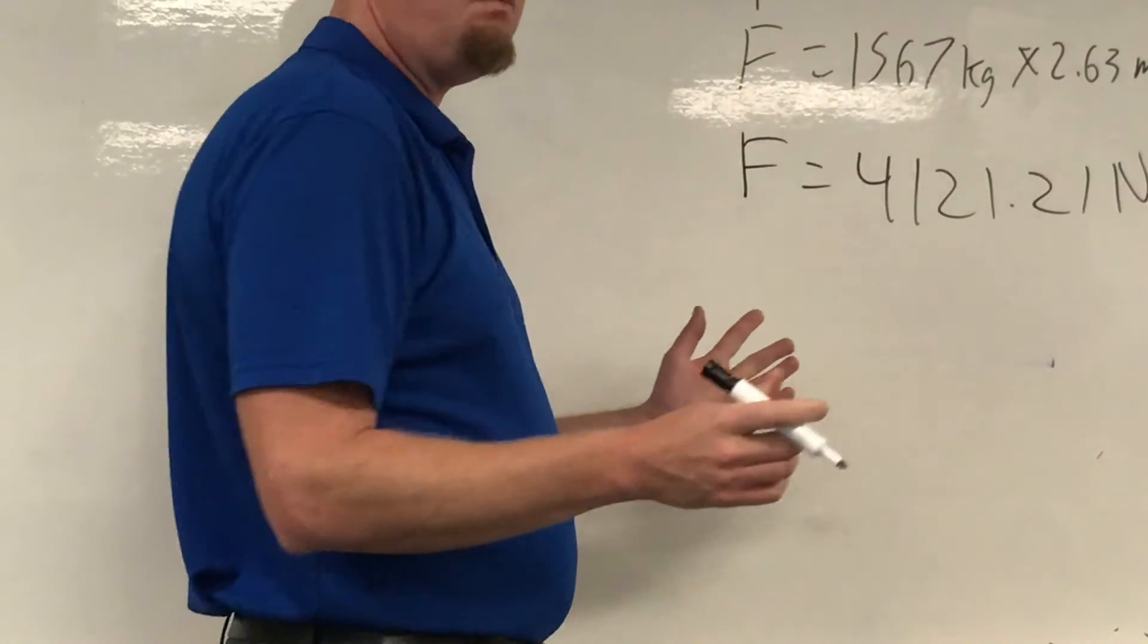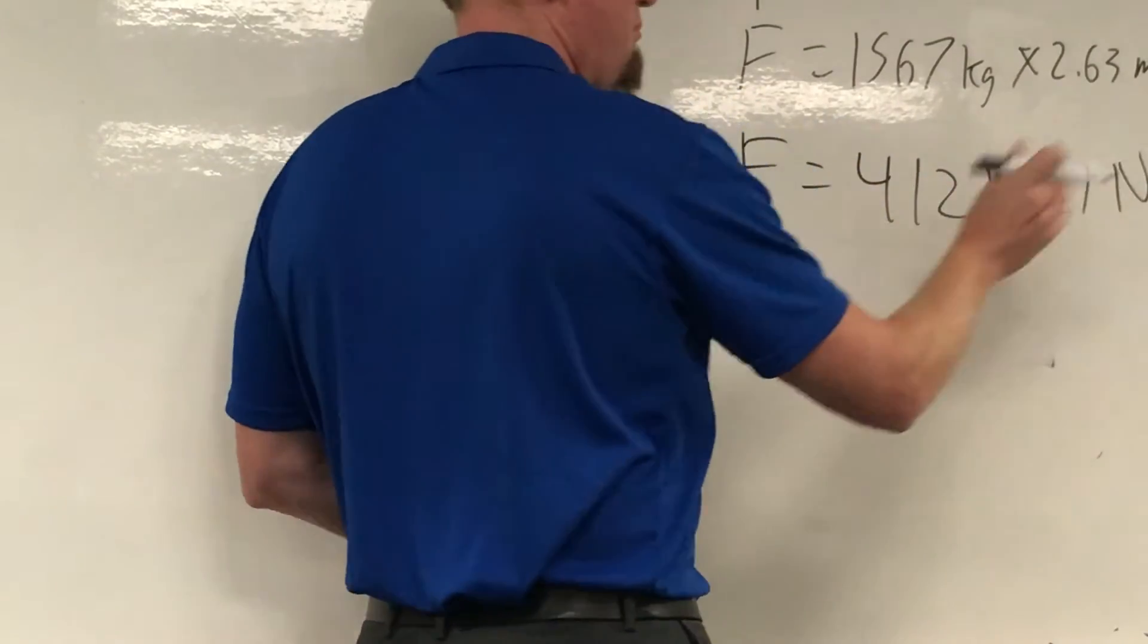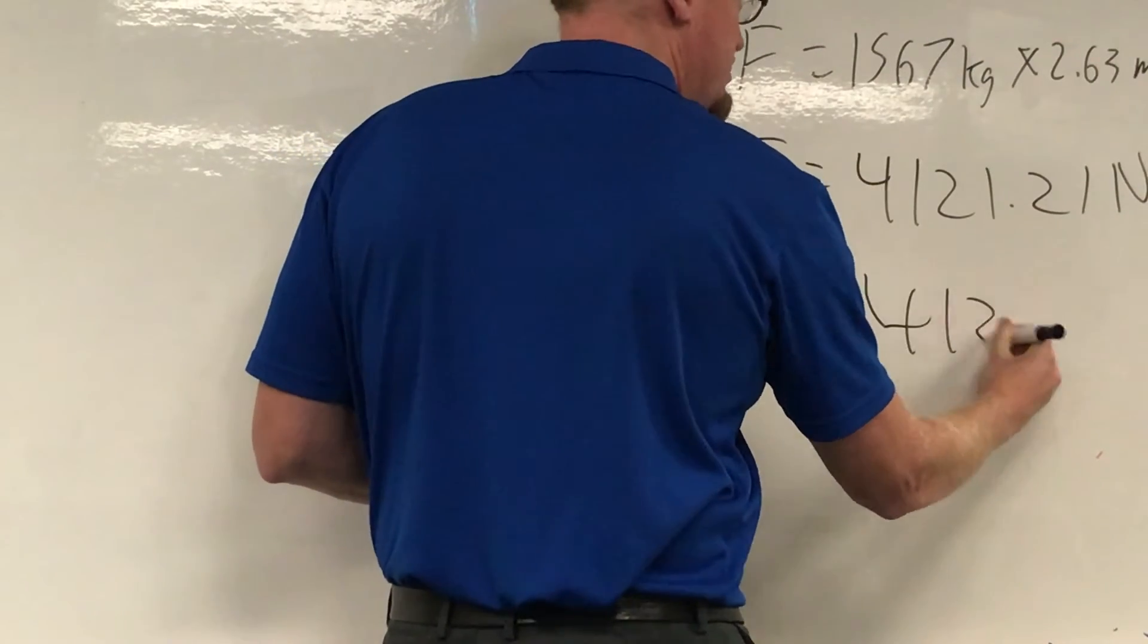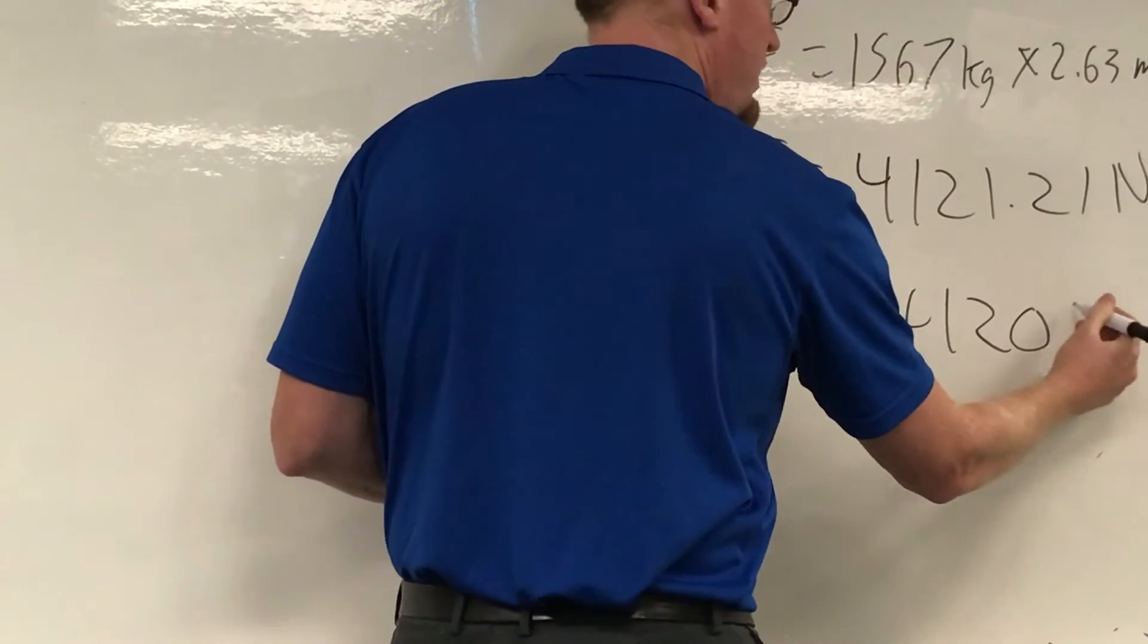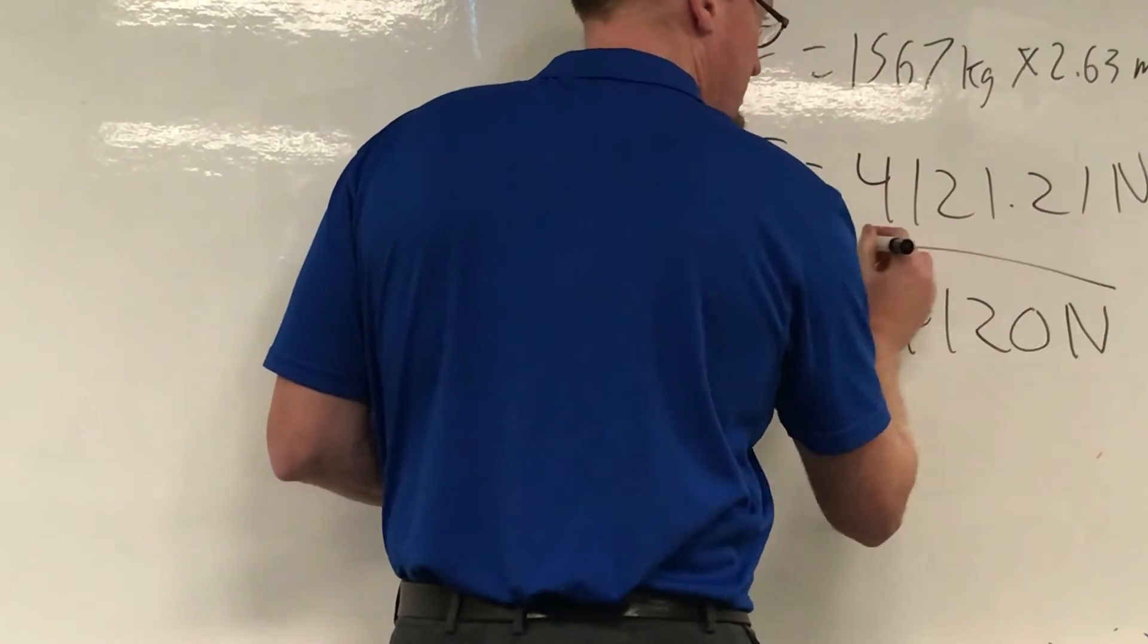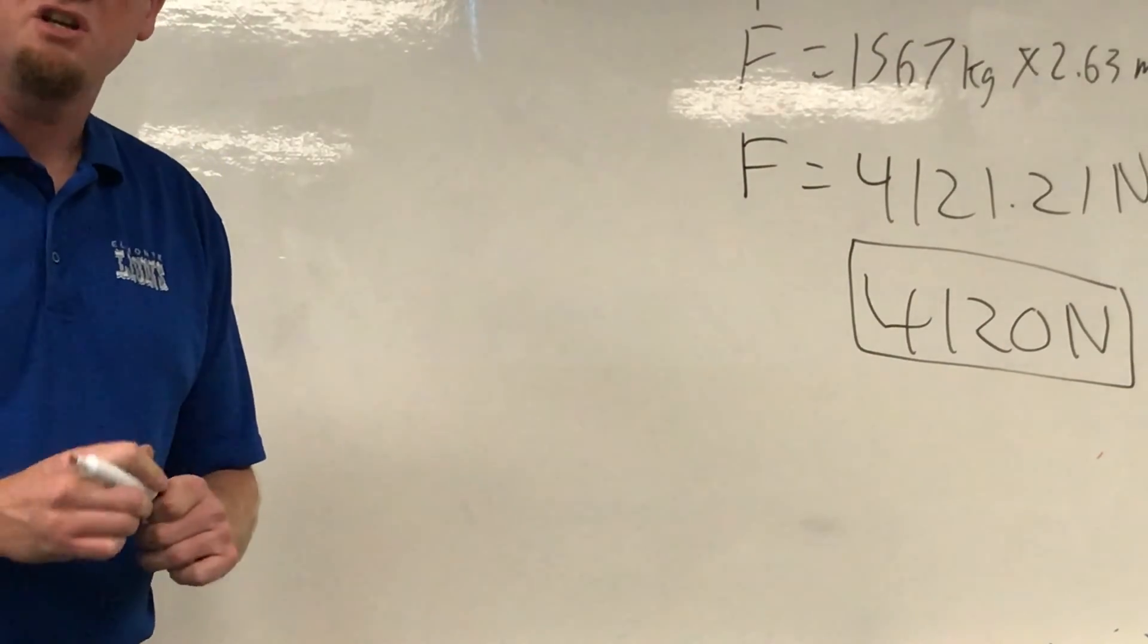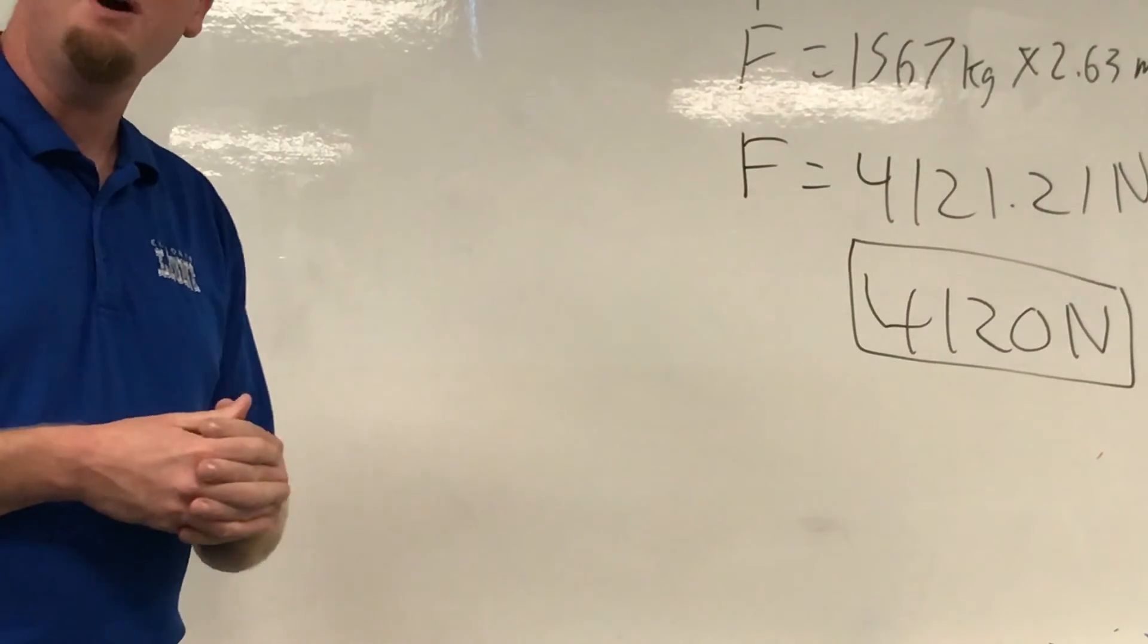Now, once again, 4 sig figs, 3 sig figs. My answer can only have 3 sig figs. So my answer, I'm going to round that 4,1,2. Round that down. So 4,120 newtons is the amount of force my car's engine applies when I really am flooring it. Thank you very much.